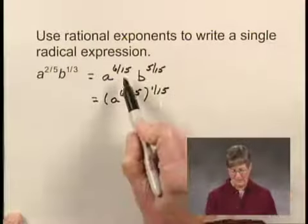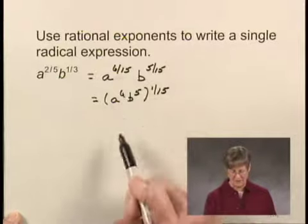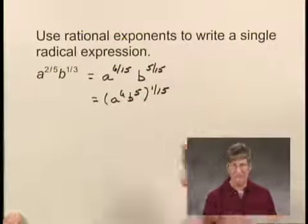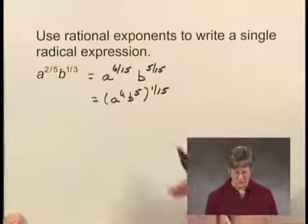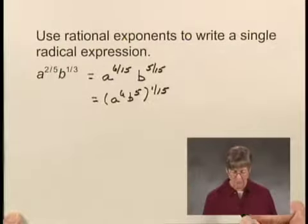I'm really kind of undoing a multiplication here. If I multiply six times one-fifteenth, I get six-fifteenths, and five times one-fifteenth is five-fifteenths. So I'm doing that in the reverse order, and I'm doing that because I want to get an expression that will give me the index of a radical.